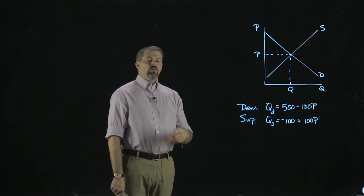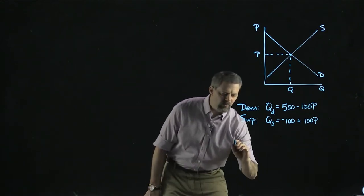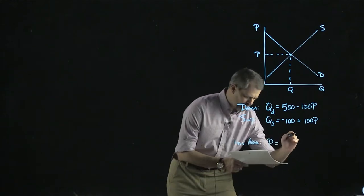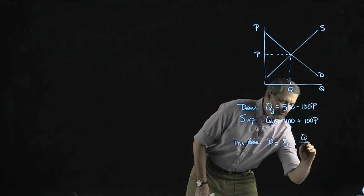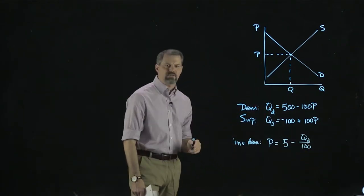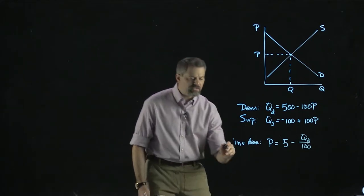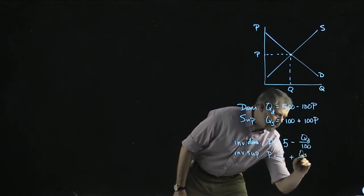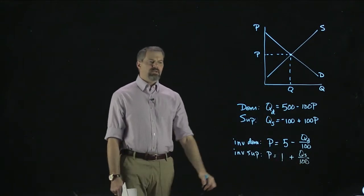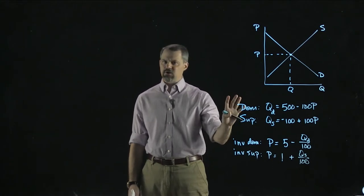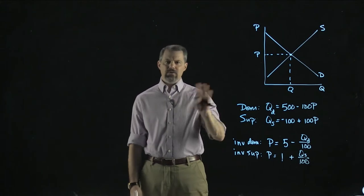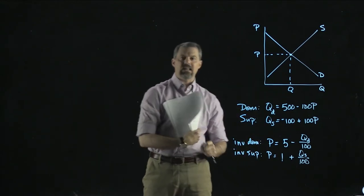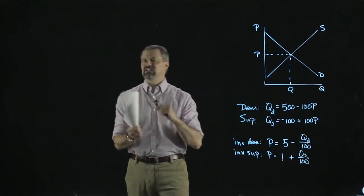We can also think about the inverse demand and inverse supply curves, which are solved for P. Our inverse demand is P equals 5 minus Q over 100. Our inverse supply is P equals 1 plus Q over 100. Always remember that the demand curve and the inverse demand curve are inverses of each other, and likewise for the supply curve and inverse supply curve.